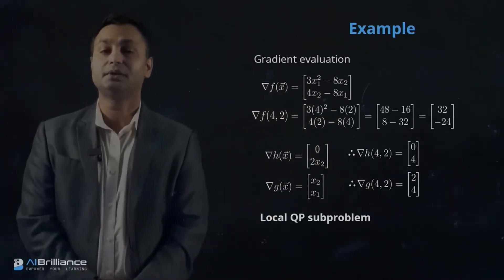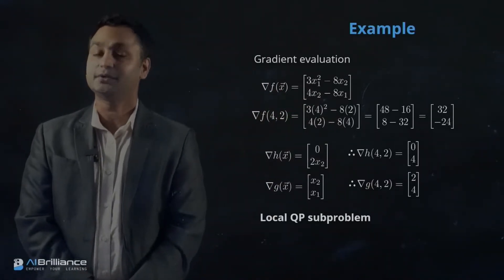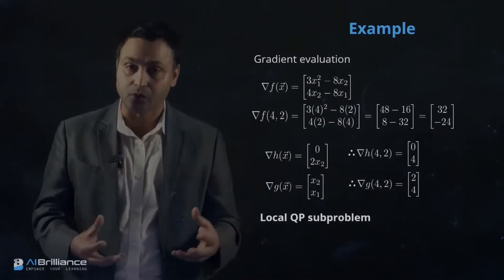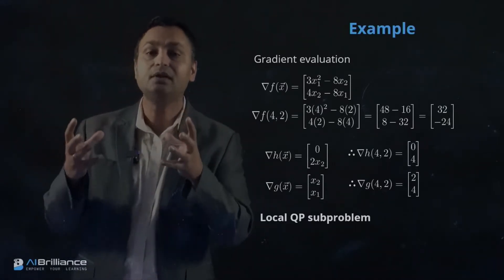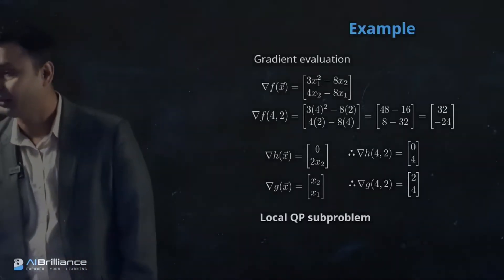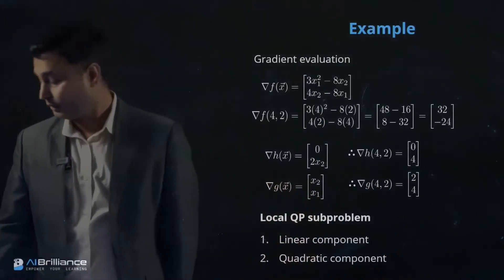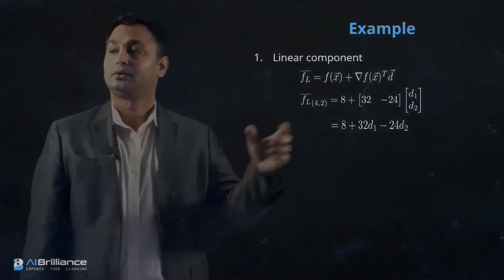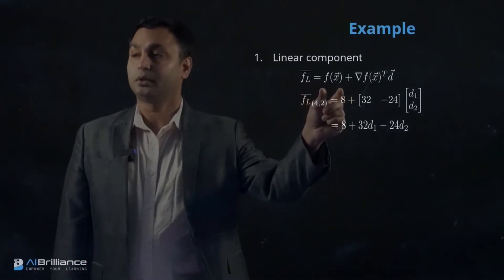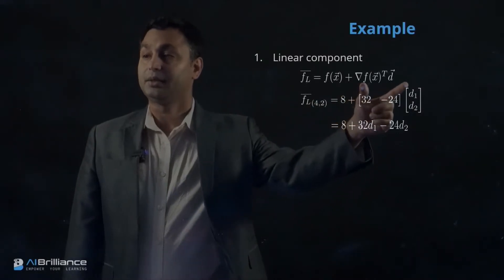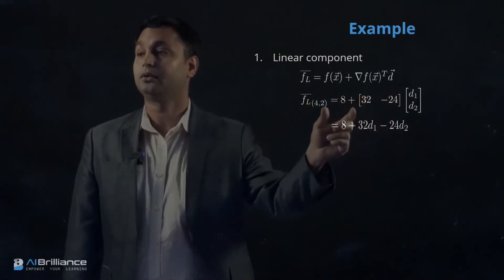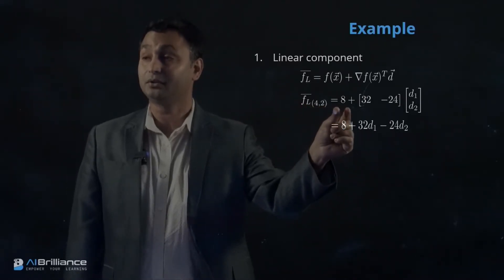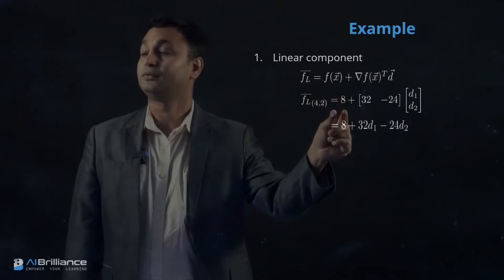Now we have all the information needed to set up the local quadratic programming problem for the original objective function. The objective function has two components: a linear component and a quadratic component. We write the linear component as f(x) + ∇f(x)ᵀ·d. Locally at (4,2), this equals 8 plus the gradient vector [32, -24] times [d1, d2]. Here d1 and d2 are local variables corresponding to x1 and x2.